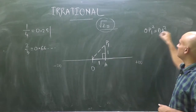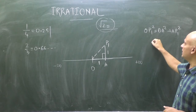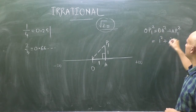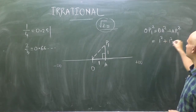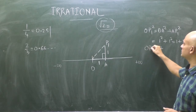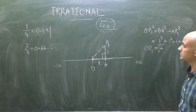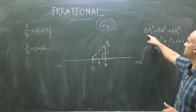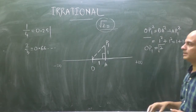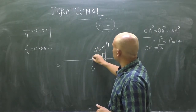To find OP1 I will use Pythagoras theorem. Pythagoras theorem says: OP1 squared equals base squared plus AP1 squared, that is 1 squared plus 1 squared, which equals 1 plus 1 equals 2. So OP1 squared is 2, therefore OP1 is plus or minus root 2. Since this is a distance, we take the positive value, so OP1 is root 2.